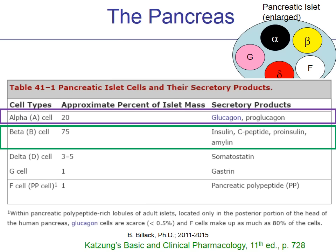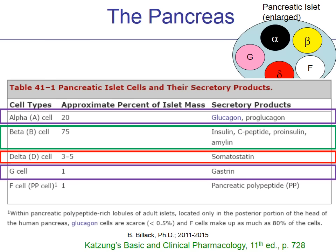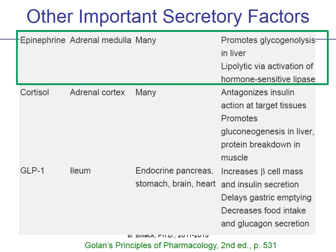Delta cells are only 3% to 5% of the pancreatic islet, and the G cells and F cells are very low abundance, but still making important hormonal substances that affect digestion. Aside from glucagon and insulin, there are other important secretory factors that can affect blood glucose, such as epinephrine, a catecholamine produced in the adrenal medulla.